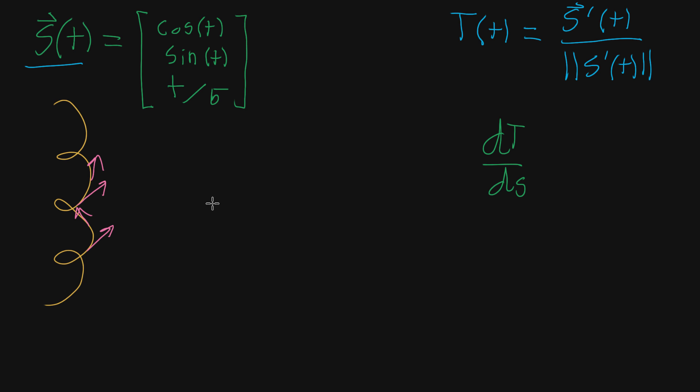As a first step, we'll find the derivative of our parametrization function. From single variable calculus, we take the derivative of each component: cosine goes to negative sine of t, sine goes to cosine of t, and the derivative of t divided by 5 is just one over five. So that's s'(t).